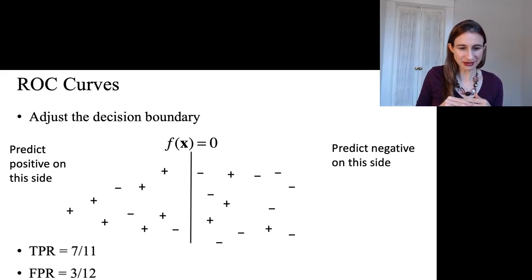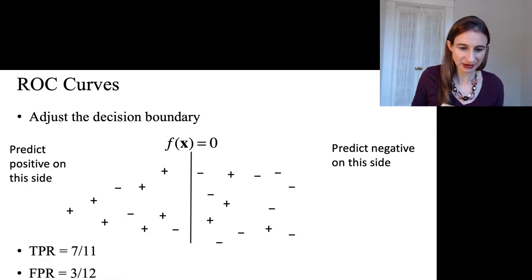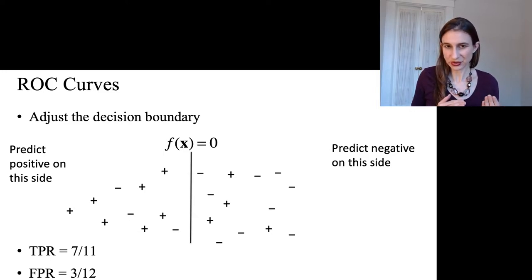Let's say we have a model, and that model is called f(x). The decision boundary is right in the middle, and I'll predict positive on the left and negative on the right. At this particular placement of the decision boundary, the true positive rate is 7 out of 11, because there are 11 positives on the board, and 7 of them are correctly classified as positives.